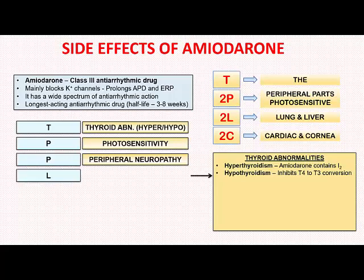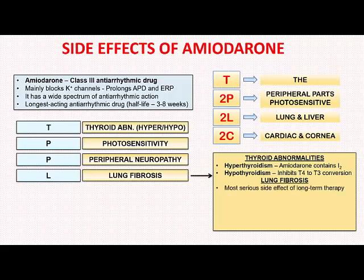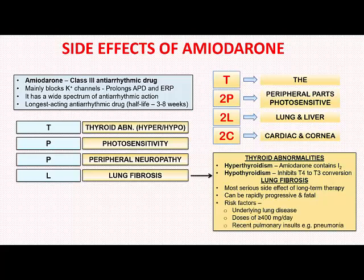Then we have the two L's. The first L refers to lung fibrosis. Lung fibrosis is the most serious side effect of long-term amiodarone therapy — it can be rapidly progressive and it can be fatal. The risk factors for developing lung fibrosis include underlying lung disease, doses more than 400 milligrams per day, and recent pulmonary insults such as a recent attack of pneumonia.